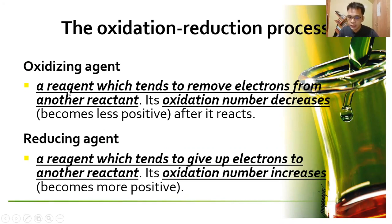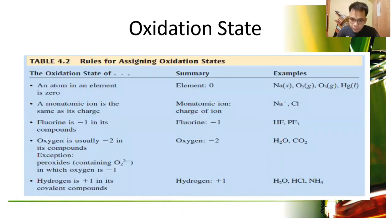And this one here is the reducing agent. The oxidizing agent is a reagent which tends to remove electrons from the other reactant. The reducing agent is the opposite definition, which tends to give up electrons to another reactant to form a reduced product.